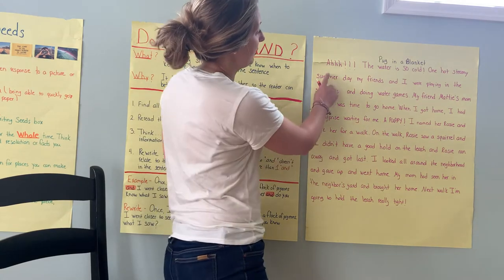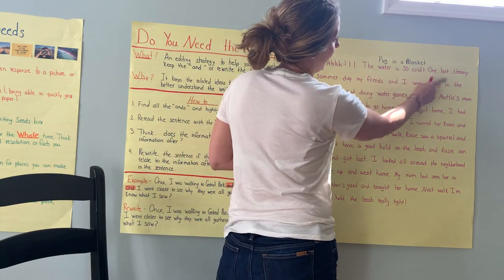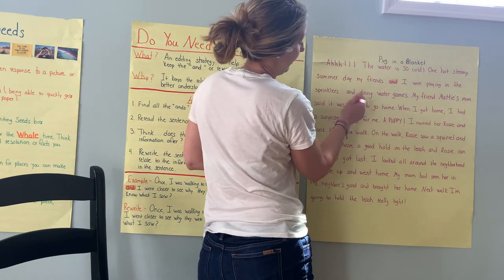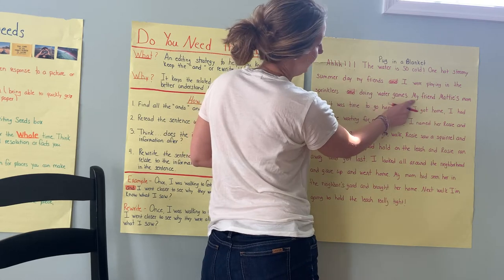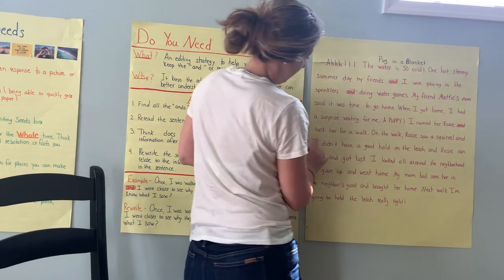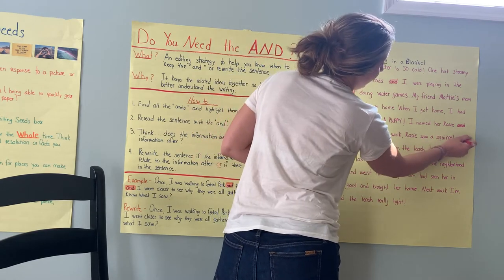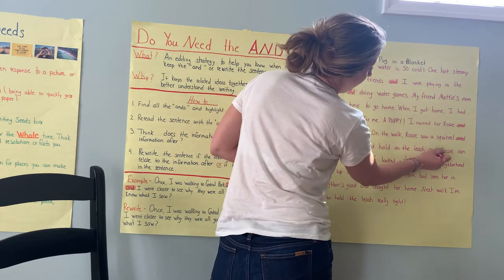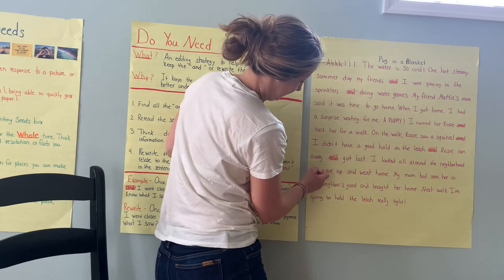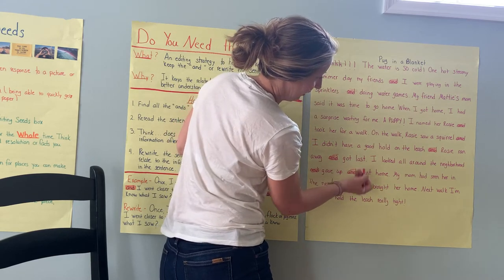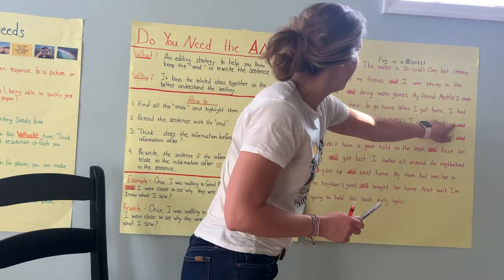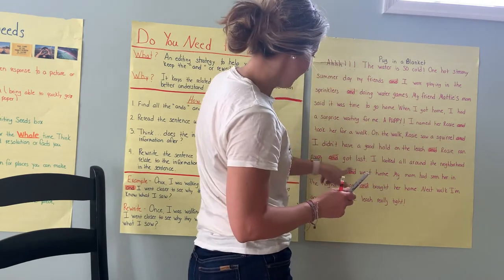I'm going to look and kind of run my finger under the text and look for the word 'and.' I don't have any in the first line. I found one — I'm going to highlight that. Got another one in the third line. There's one here, one here, another one, another one. Look at all these ands — there's another one. And that's it. So let's count: one, two, three, four, five, six, seven, eight, nine. I've got nine ands!